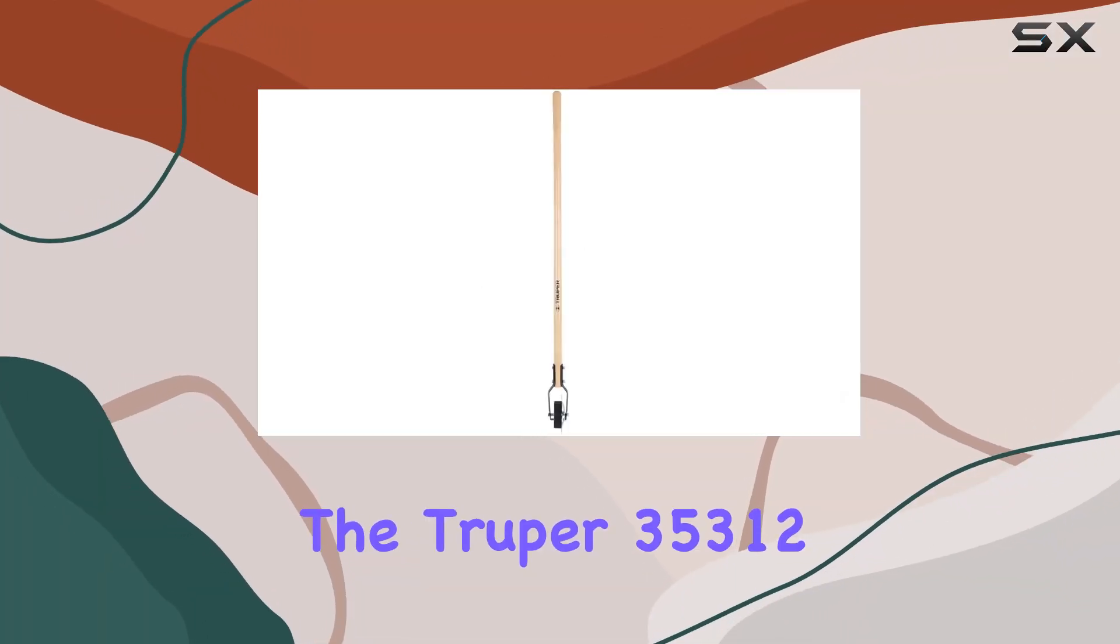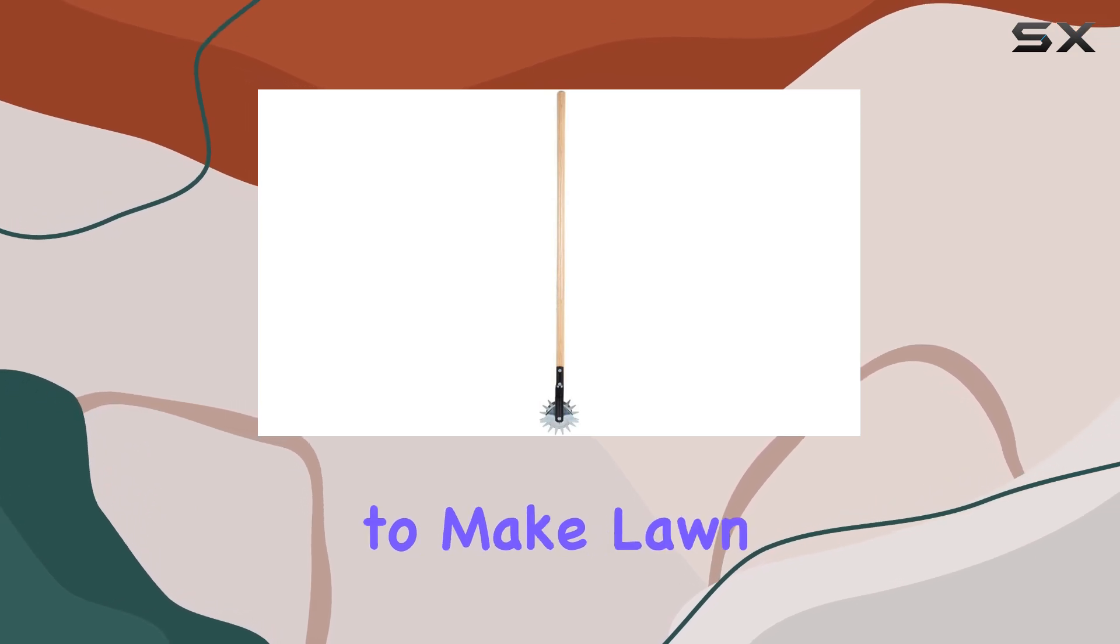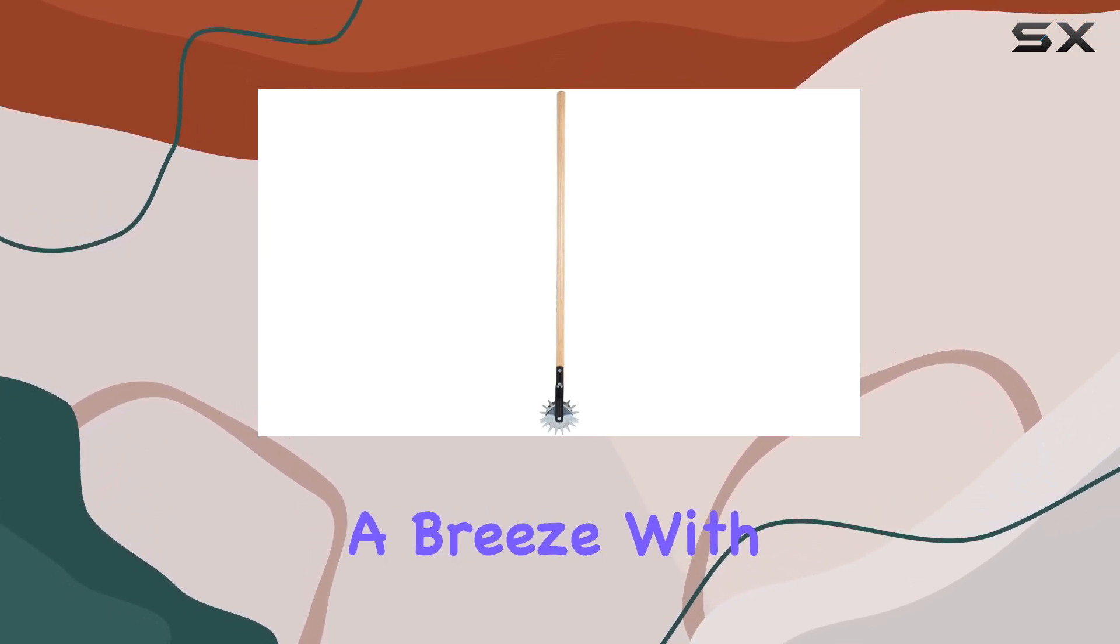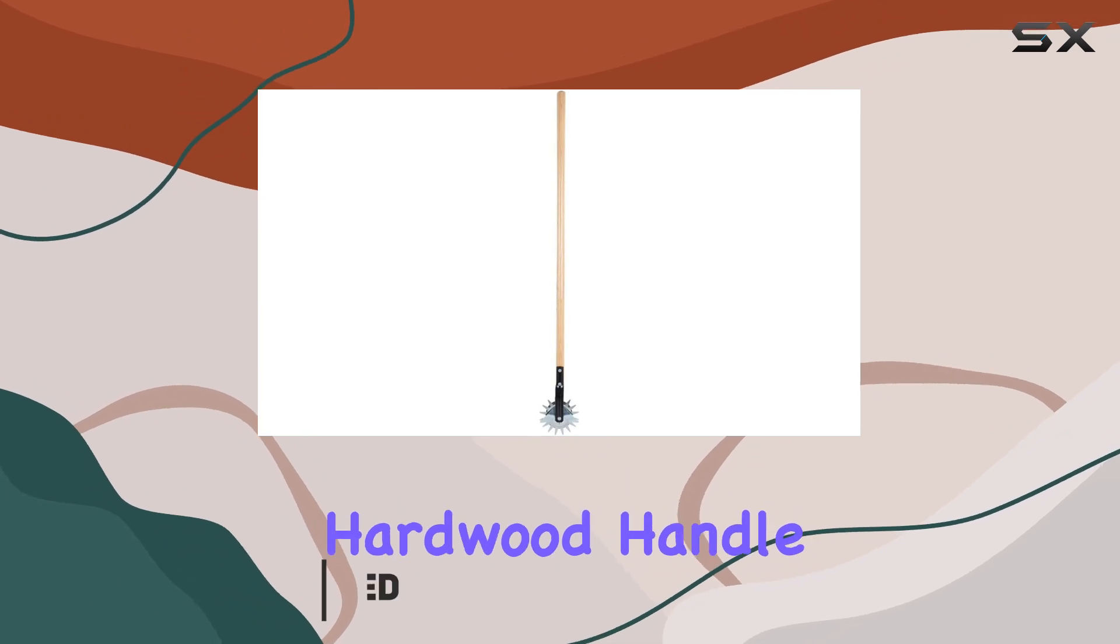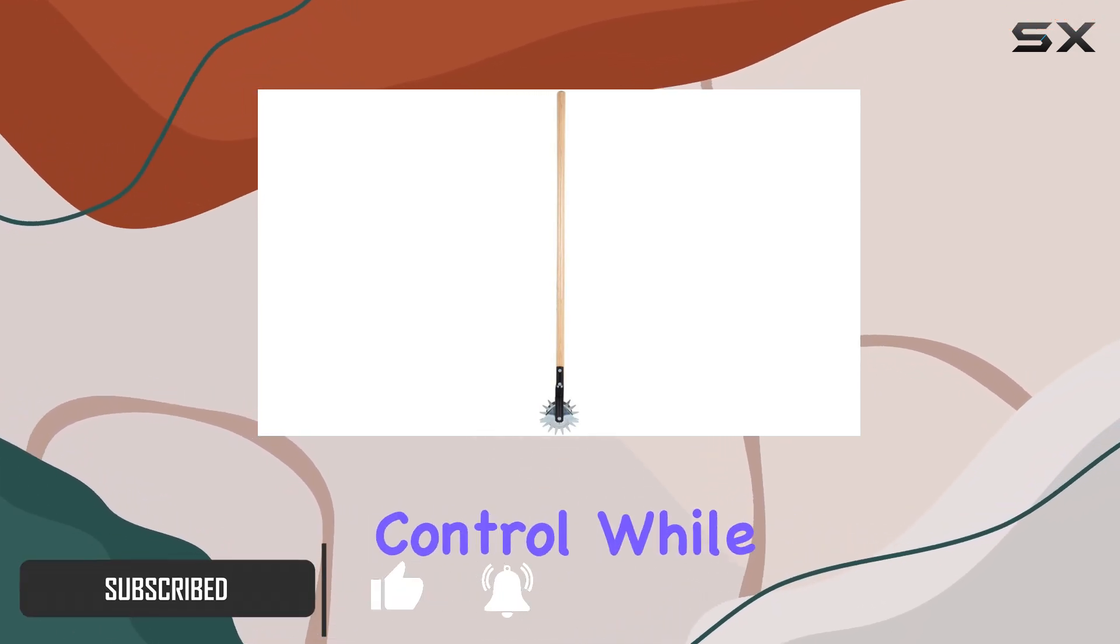The Trooper 35312 Rotary Lawn Edger is an exceptional tool designed to make lawn maintenance a breeze. With its single-wheel design and 48-inch hardwood handle, this edger provides a comfortable grip and precise control while you work.